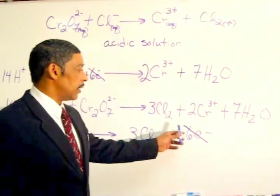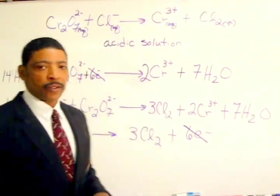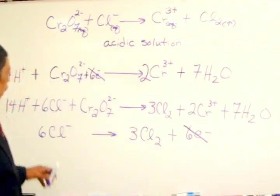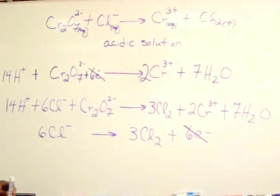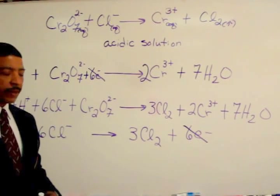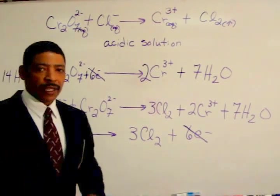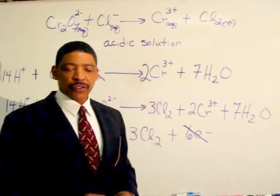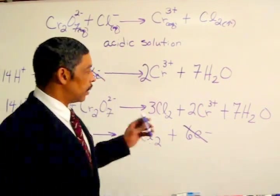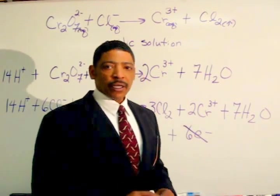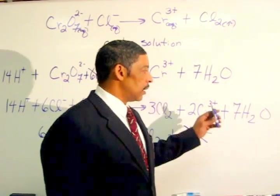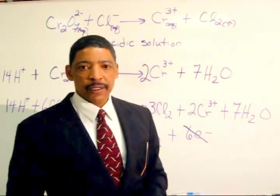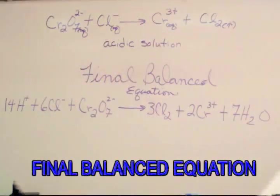After canceling the electrons, the final balanced equation is written as follows: fourteen moles of hydrogen ion plus six moles of chloride ion plus one mole of dichromate ion will produce three moles of chlorine gas plus two moles of chromium three-plus ion and seven moles of water.